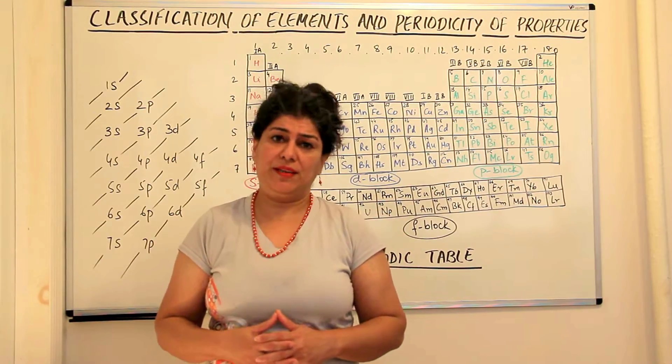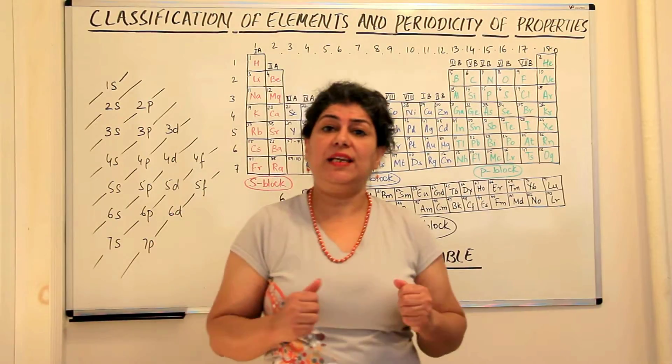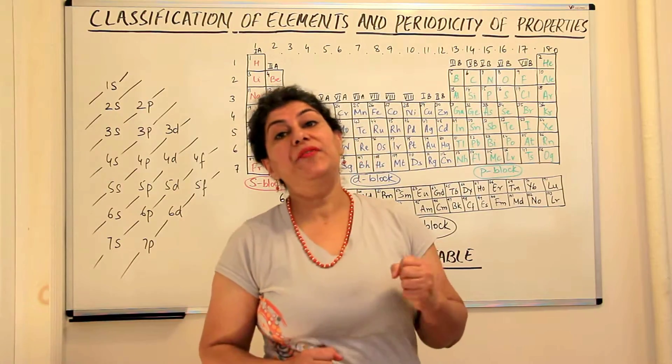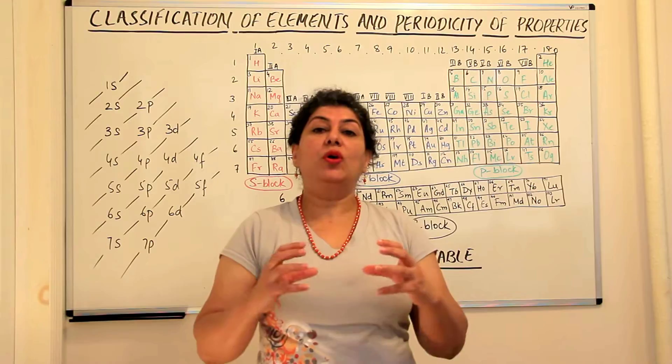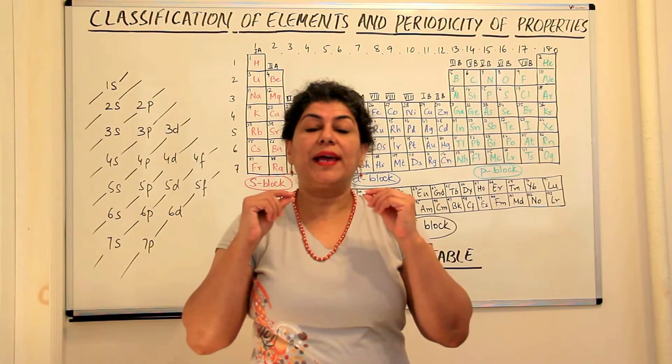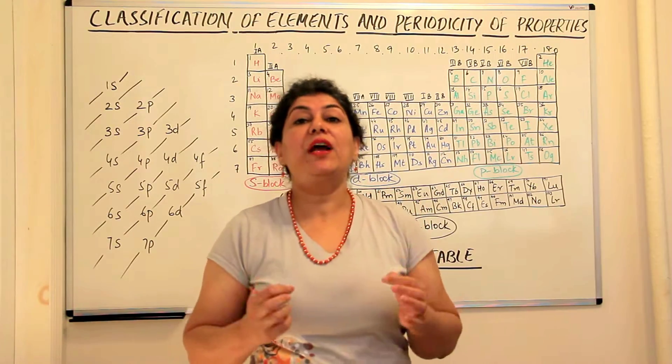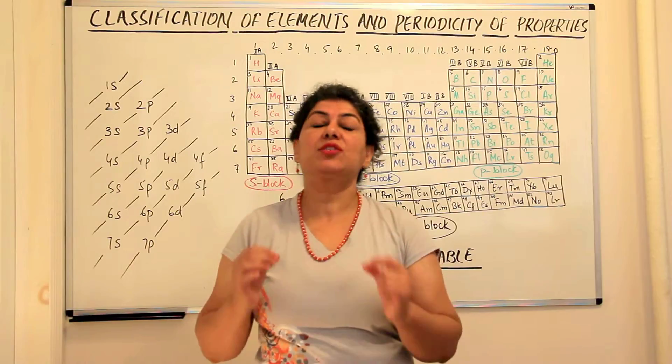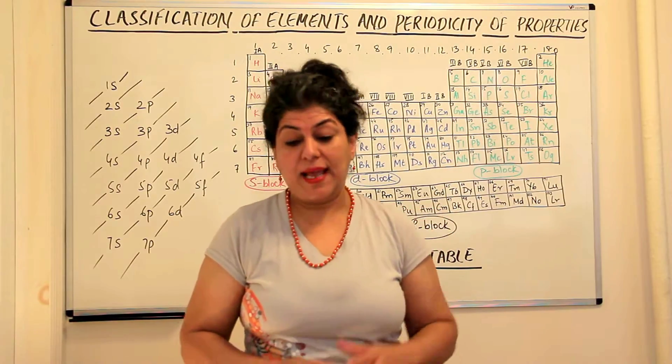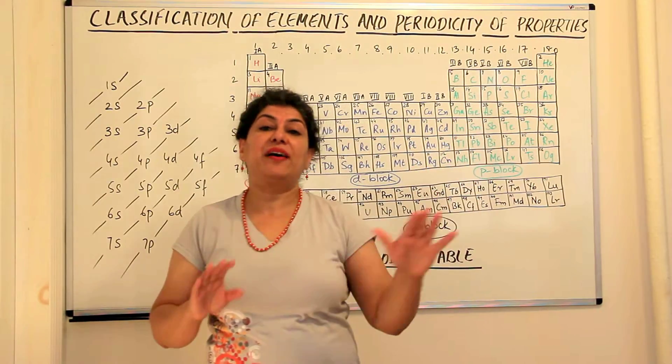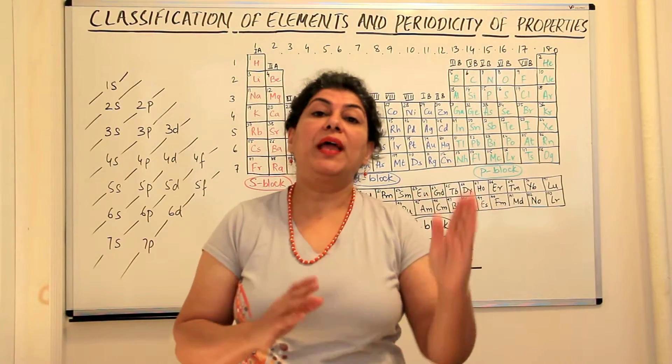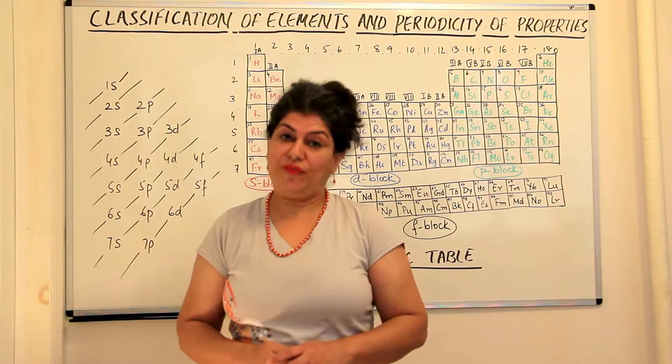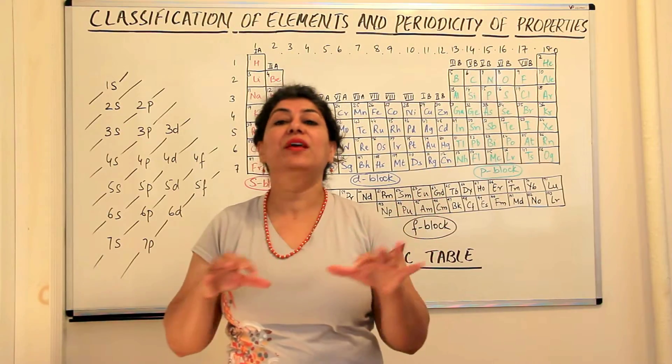So that was about Mendeleev but in 1913 a scientist called Henry Moseley carried out a test. He saw the characteristic x-ray spectrographs given out by elements and he started plotting graphs between the frequency of the x-rays produced and the atomic masses of elements to see if there was a trend.